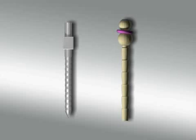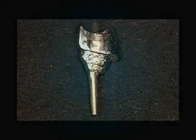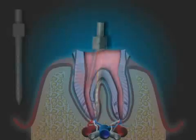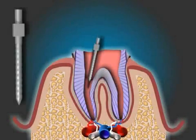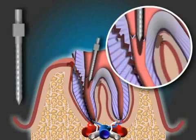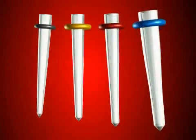On the left, you see a pre-manufactured steel post, and on the right, a pre-manufactured glass fiber post. Steel posts, whether custom made by the technician or the pre-manufactured kind, can sometimes result in a lengthwise fracture after several years. More on that in the video by the same name.